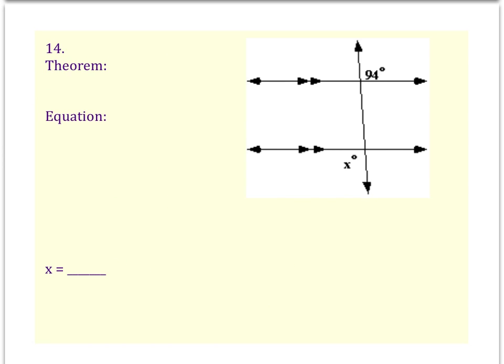On to example number 14. We have another picture where my horizontal lines are parallel. I know that because this time they both have the double arrow. Then my transversal must be the vertical line going up and down.